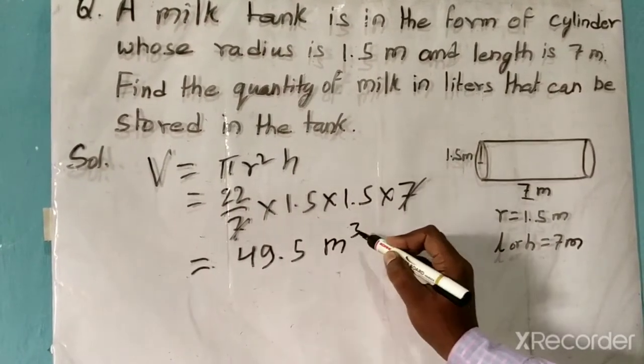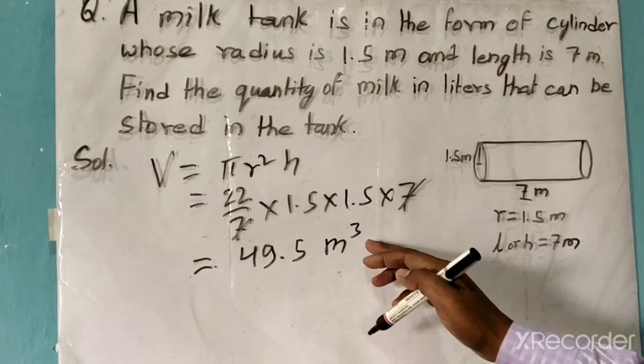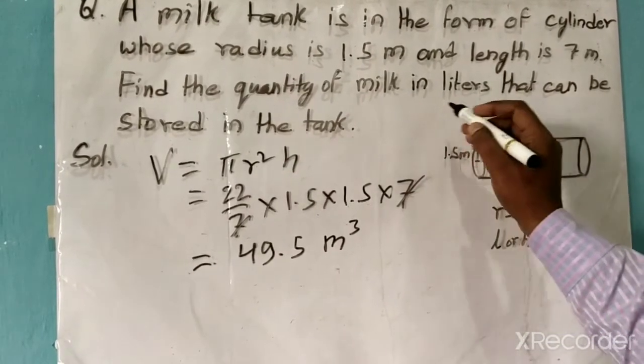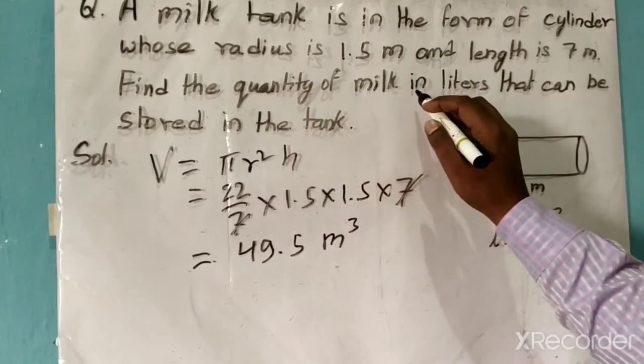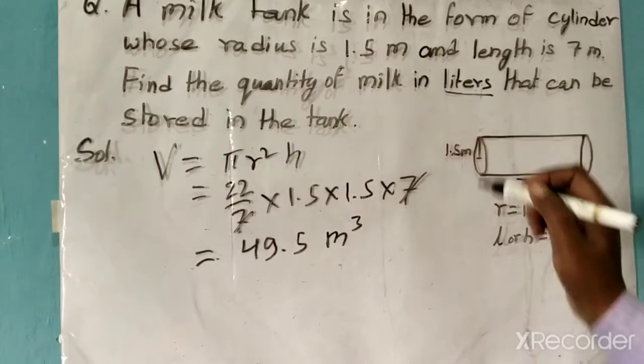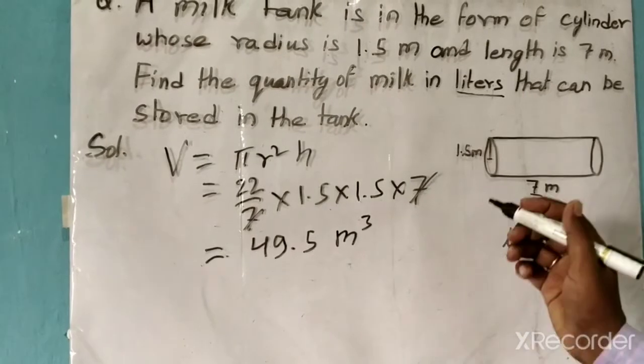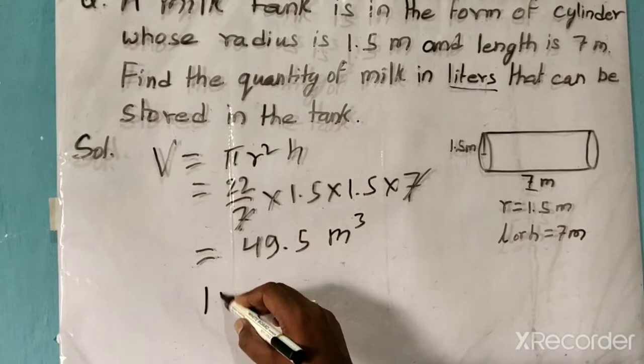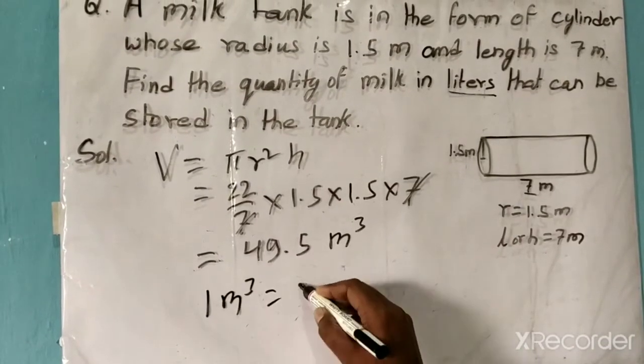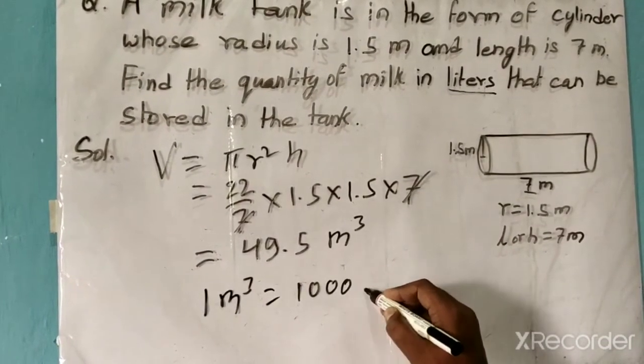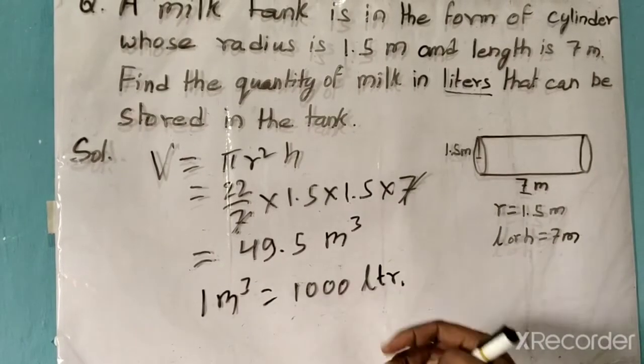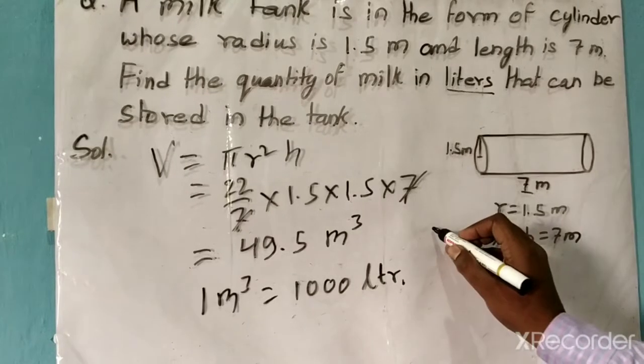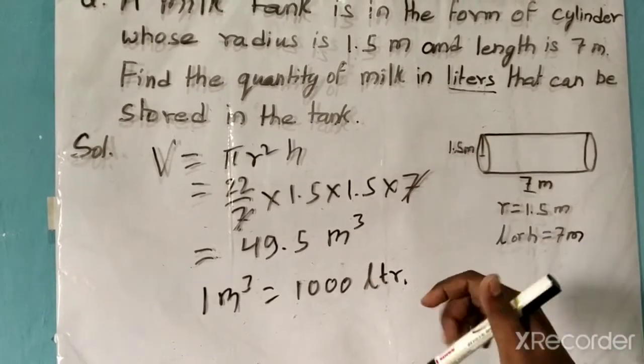This is the volume of this cylinder. But the question is asking that we have to find the quantity of milk in liters. So if 1 cubic meter is equal to 1000 liters, in a cuboid if there is a cube of 1 meter then it will contain 1000 liters. Its capacity will be 1000 liters.